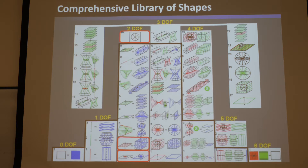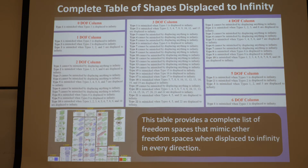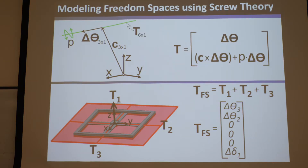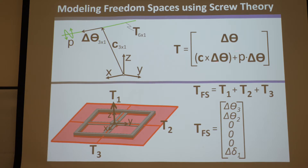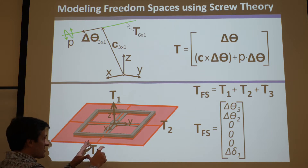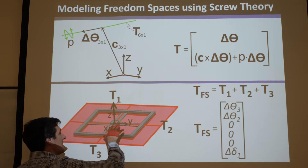You can actually start comprehending and visualizing infinity and finite space — how they blend into each other and manifest — by studying this chart. Recognizing that if the freedom space manifests as something else, the constraint space does too. So there are lots of cool realizations about how all these shapes morph into each other. Now let's look at the math behind displacing stuff to infinity. Any twist can be described by a displacement omega — a delta omega — consisting of a 3×1 c vector and a 3×1 omega or theta vector, plus a pitch.